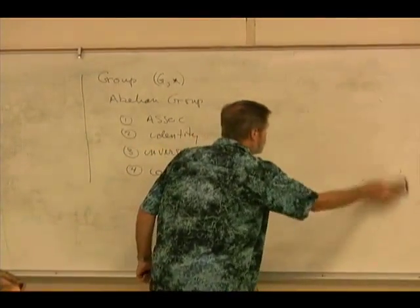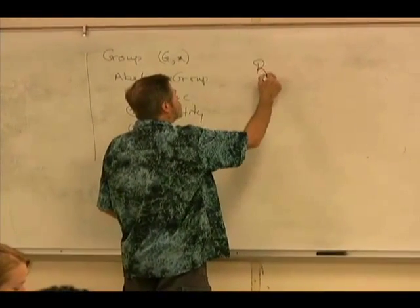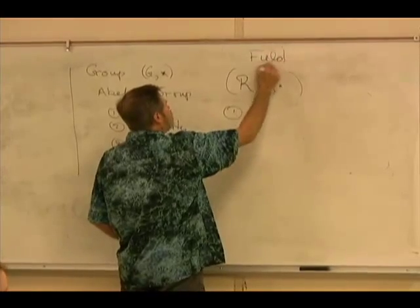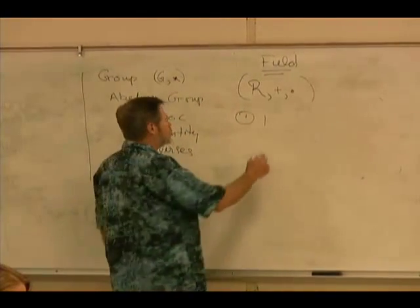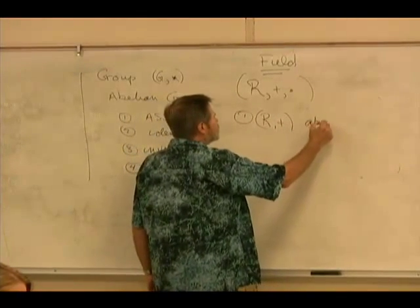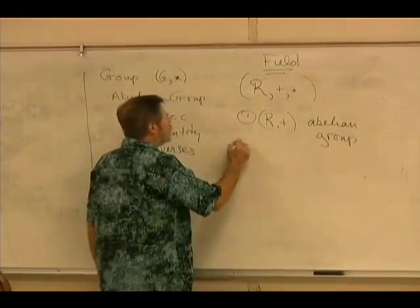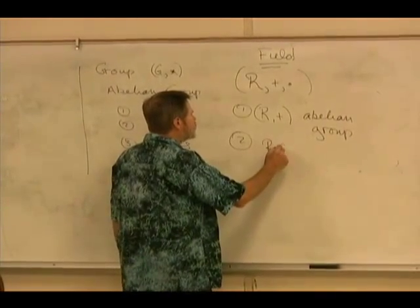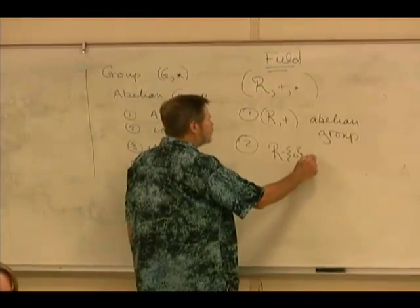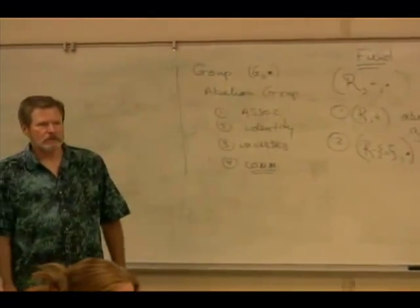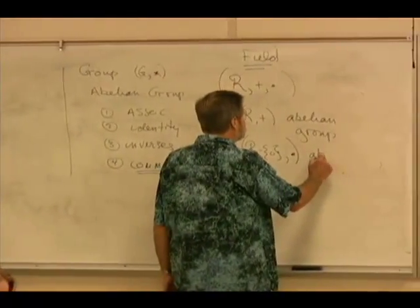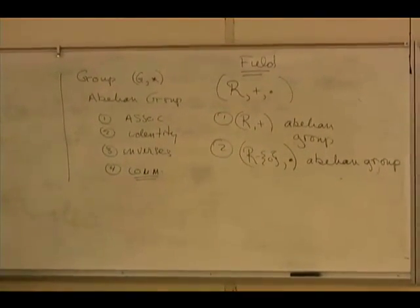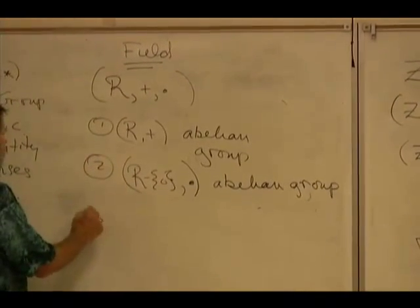What I'd like to do is build this up as close to a field as we can. If I use R to stand for a ring under addition and multiplication, I want to go towards a field which is our maximum structure for a set with two binary operations. R plus is an abelian group. Are you always assuming that you're throwing the zero out? Yes. Because zero times anything is zero.